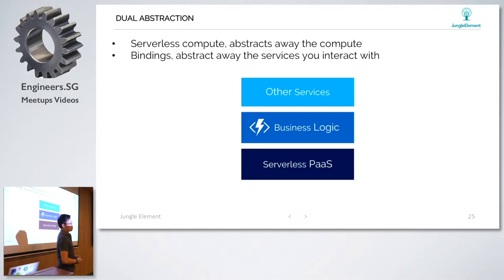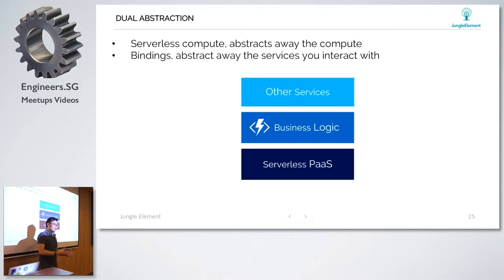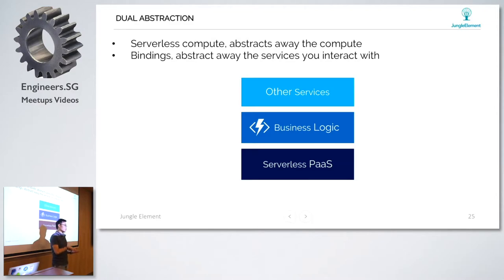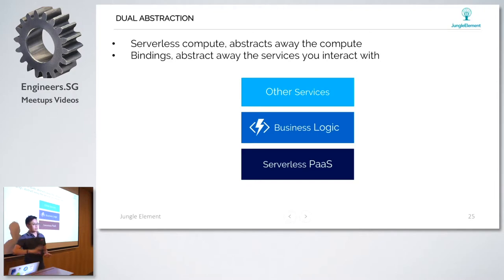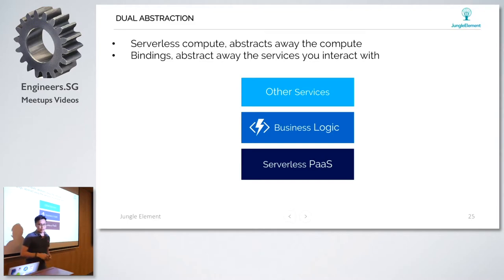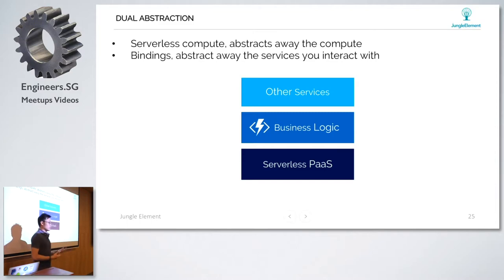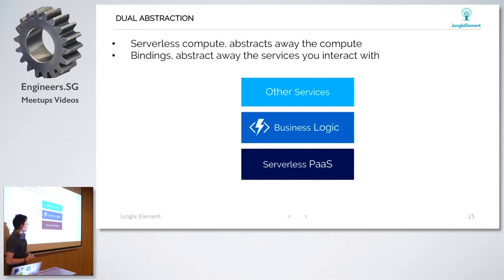Serverless architecture, or Azure Functions, is actually a dual abstraction. The first - serverless compute - abstracts away the compute itself. If you were to deploy an application on Azure compute, your compute cycle is on the VM. Serverless abstracts the compute out so it goes to functions - you let functions handle your compute, do the heavy lifting, and let your VM and servers do the main thing. The second abstraction is the bindings, which abstract away some of the interactions with services - whether it's business logic or other app services you're integrating with. This allows you to build on top of other services quickly.